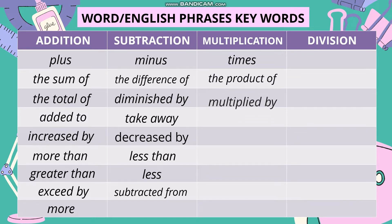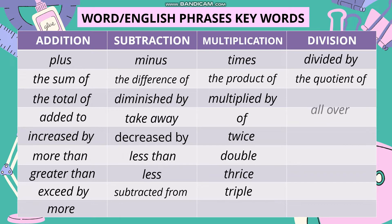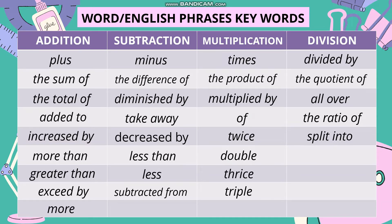For multiplication: times, the product of, multiplied by, of, twice, double, thrice, triple. For division: divided by, the quotient of, all over, the ratio of, split into. Remember, you don't need to memorize all keywords for each operation — what's important is that you are familiar with and understand the meaning of each keyword.